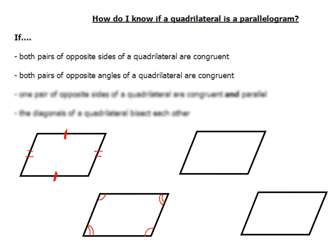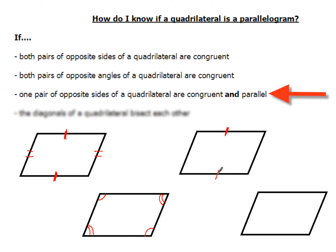There's a third way, and this involves one pair of sides. With one pair of sides, you could show that they're both congruent — this side right here and this side right here — and they've got to be parallel. So we might have to use some of our properties of parallel lines to show that those two lines are parallel.